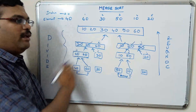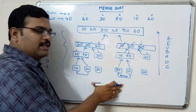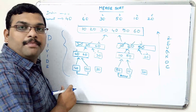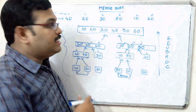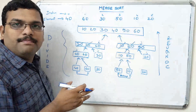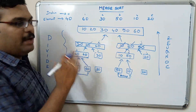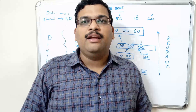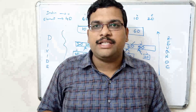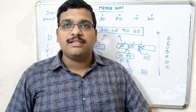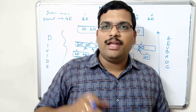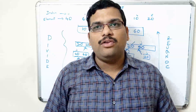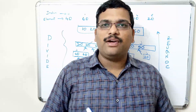This process is called conquer — divide until we get individual elements, then compare and merge from the bottom to top. That is the conquer method. This is how merge sort is implemented, following the divide and conquer approach. Hope you understood merge sort. Please like, share, and subscribe, and post any doubts in the comment section. Thanks for watching!